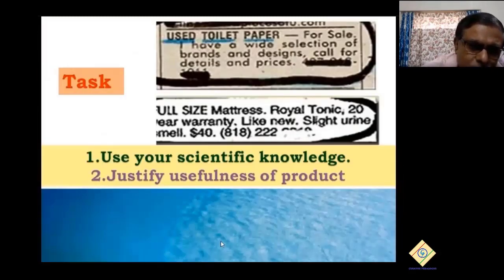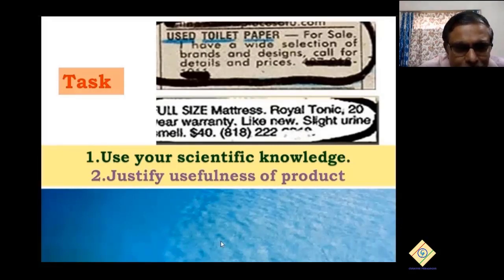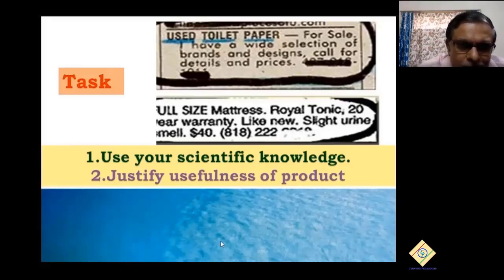Now, these are two advertisements which actually appeared in the newspaper. The first one: used toilet paper for sale. Do you think anyone will buy used toilet paper? Or even a mattress with a slight urine smell — will somebody buy that? Now, you're all scientists. Can you think of one way of using them? This is not a joke — it was actually advertised in the newspaper.